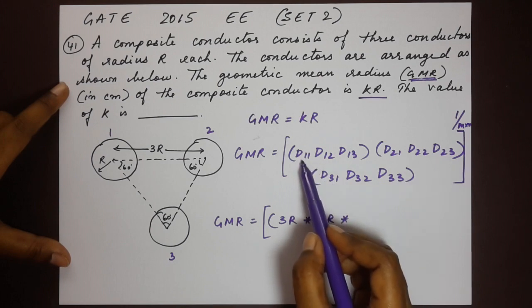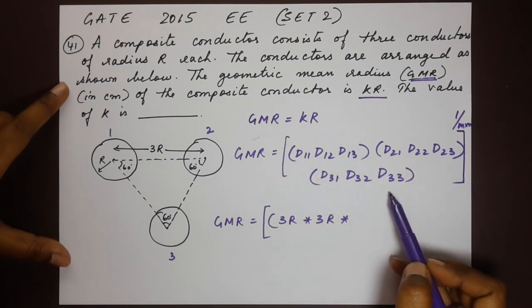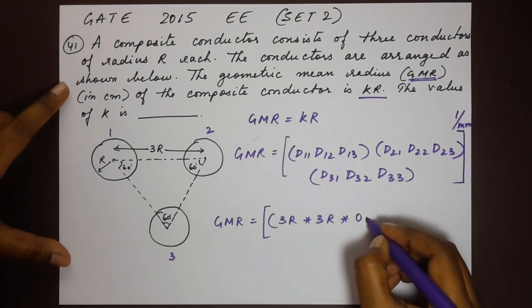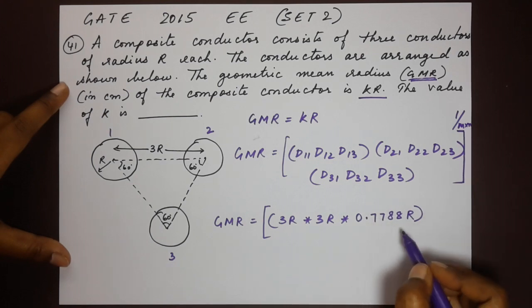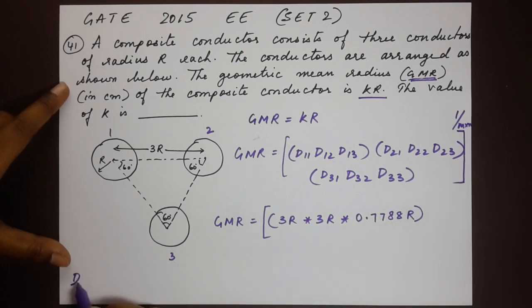The values of d11, d22 and d33 is a standard of 0.7788r. This is a standard value. Now what d11, d22 and d33 are known as - they are known in general as r dash, which is 0.7788r. Now this r dash here is known as factions radius.